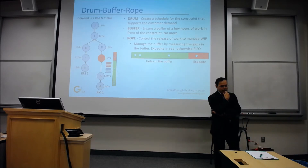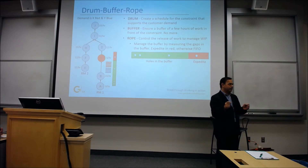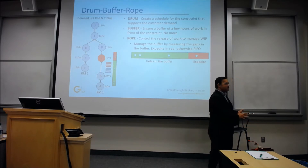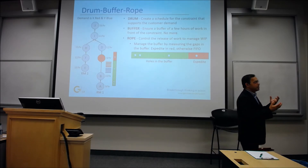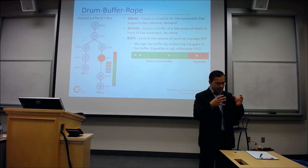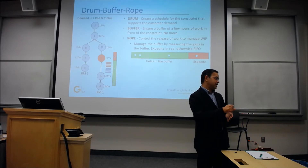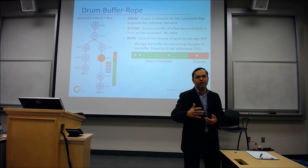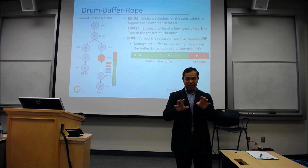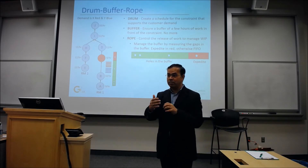In production or manufacturing, a lot of the time the touch time to lead time ratio is very small. The machine will process something for like 30 seconds, but the queue time in front of the machine is going to be like two hours — so the lead time ratio is almost 1-to-7 or 1-to-10. In projects, you'll find it's very different: a software engineer will code for three days and give a duration of six days. That is the basic difference between production and project.